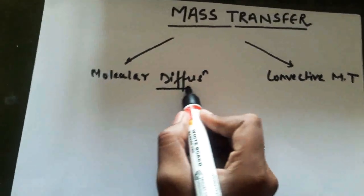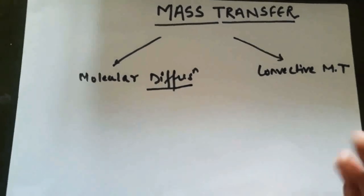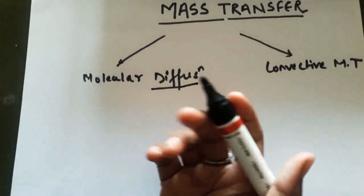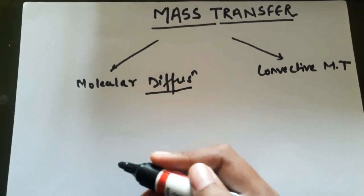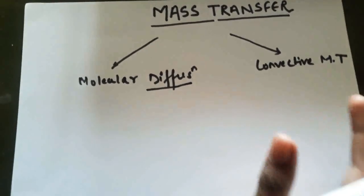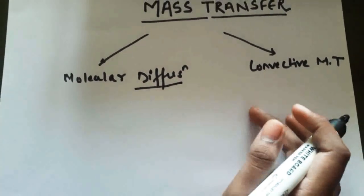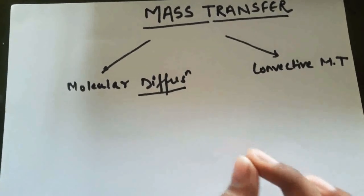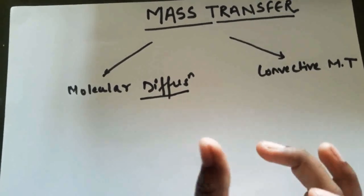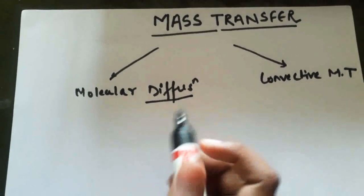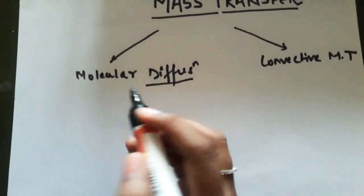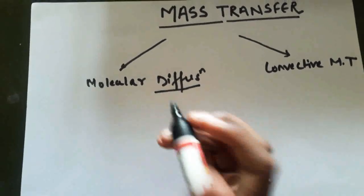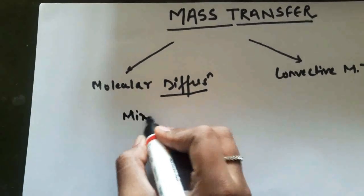Molecular diffusion — as we have been studying since sixth grade — refers to the movement of a molecule from a higher concentration to a lower concentration to destroy the concentration gradient. Molecular diffusion occurs in a mixture, where there is movement of a component molecule and a concentration difference. The key word for molecular diffusion is mixture.